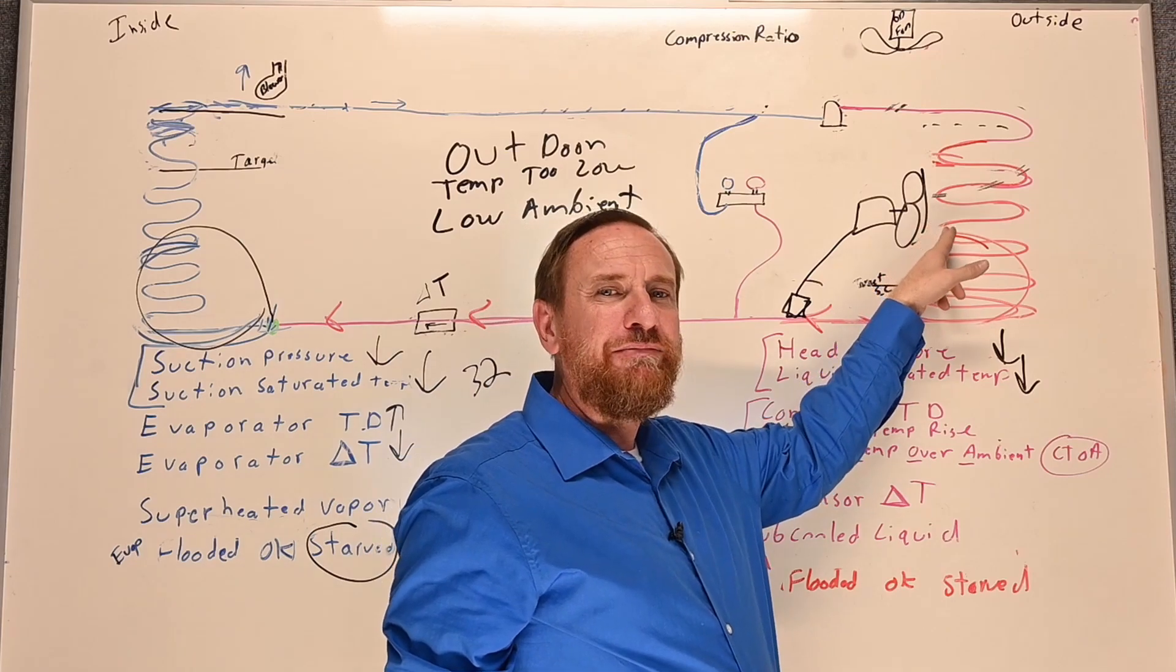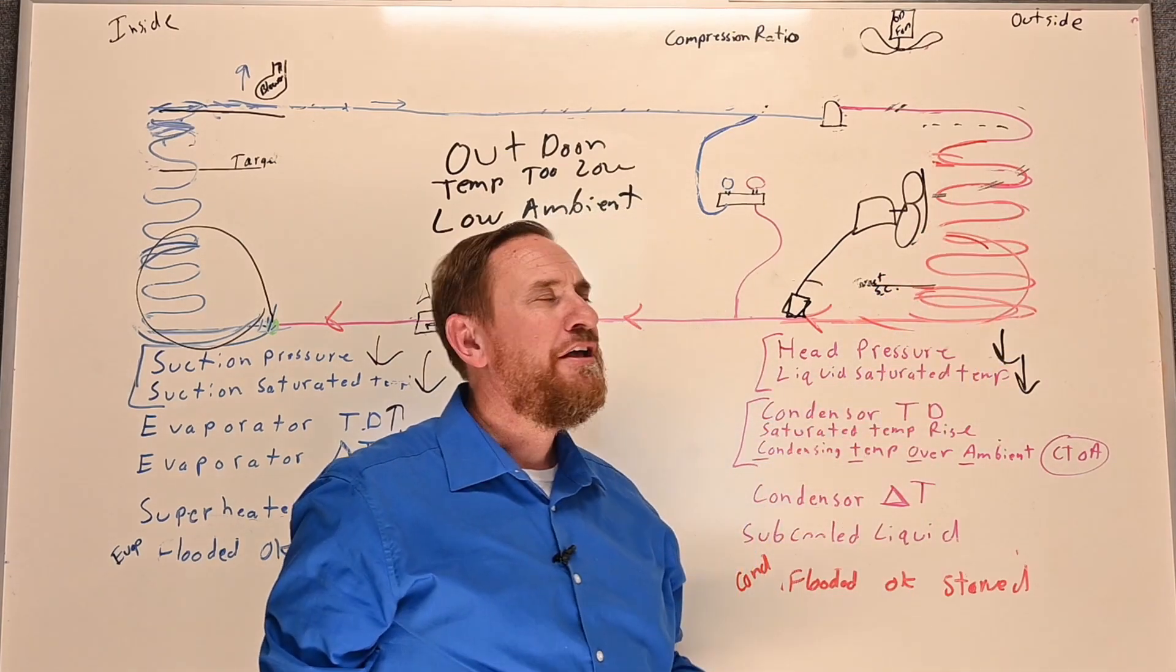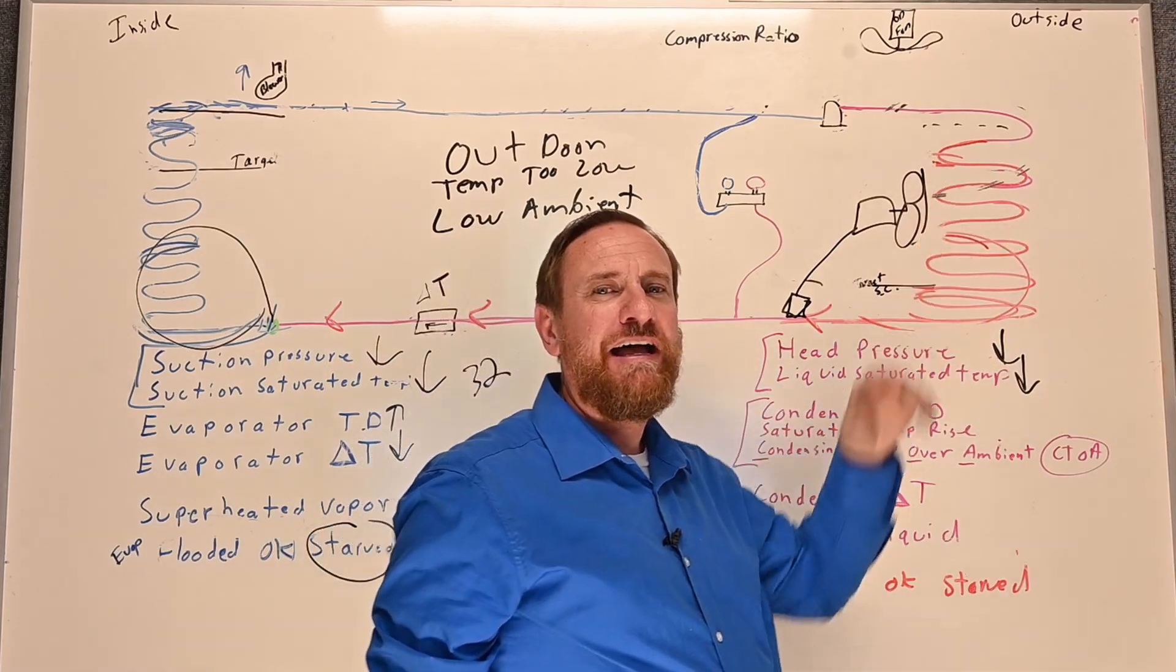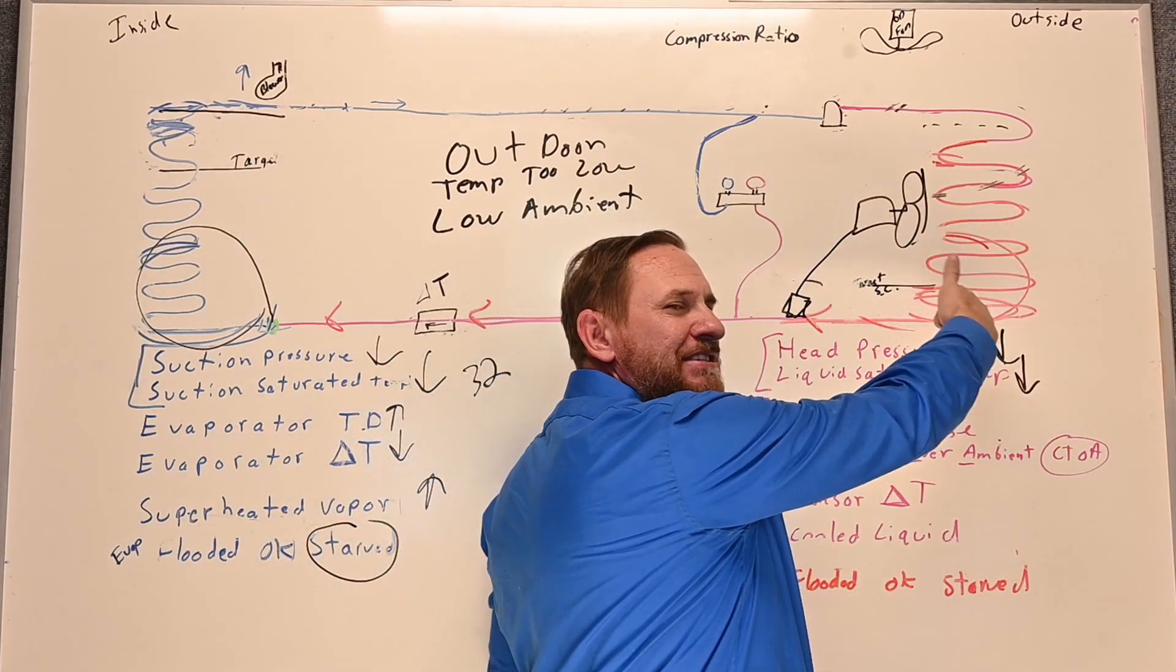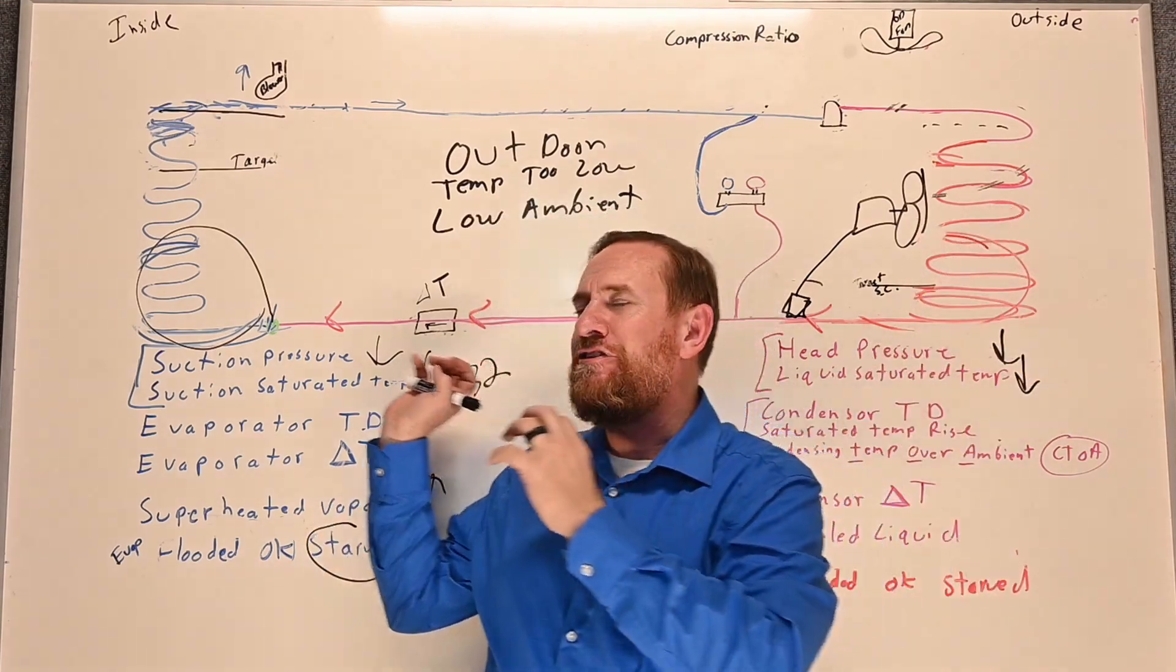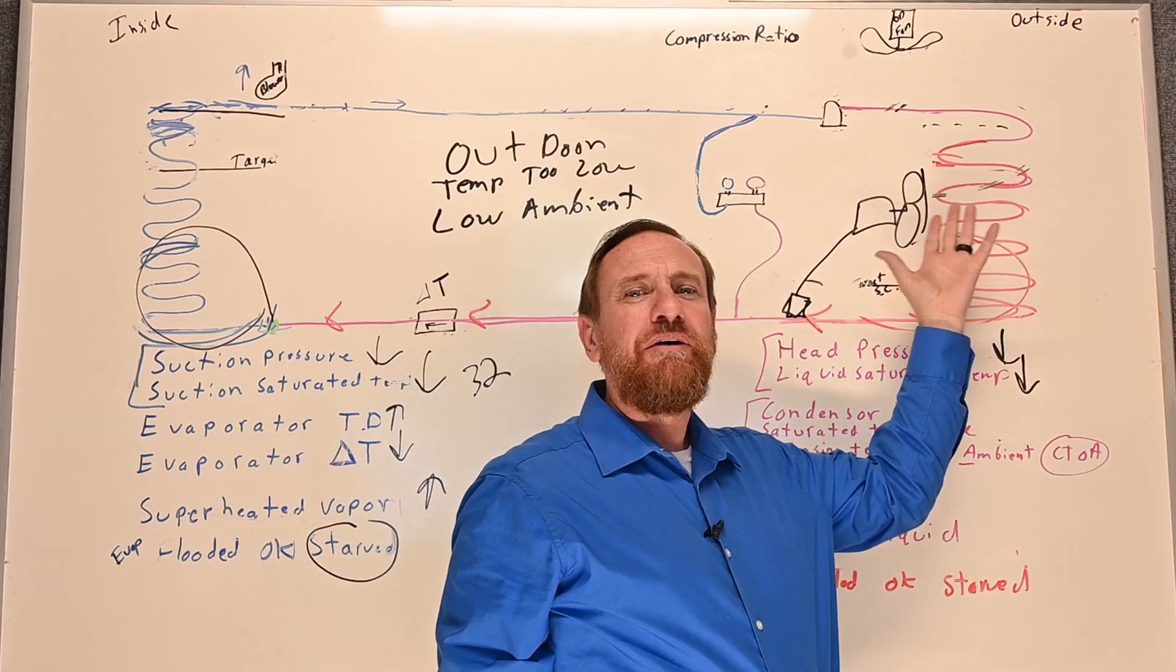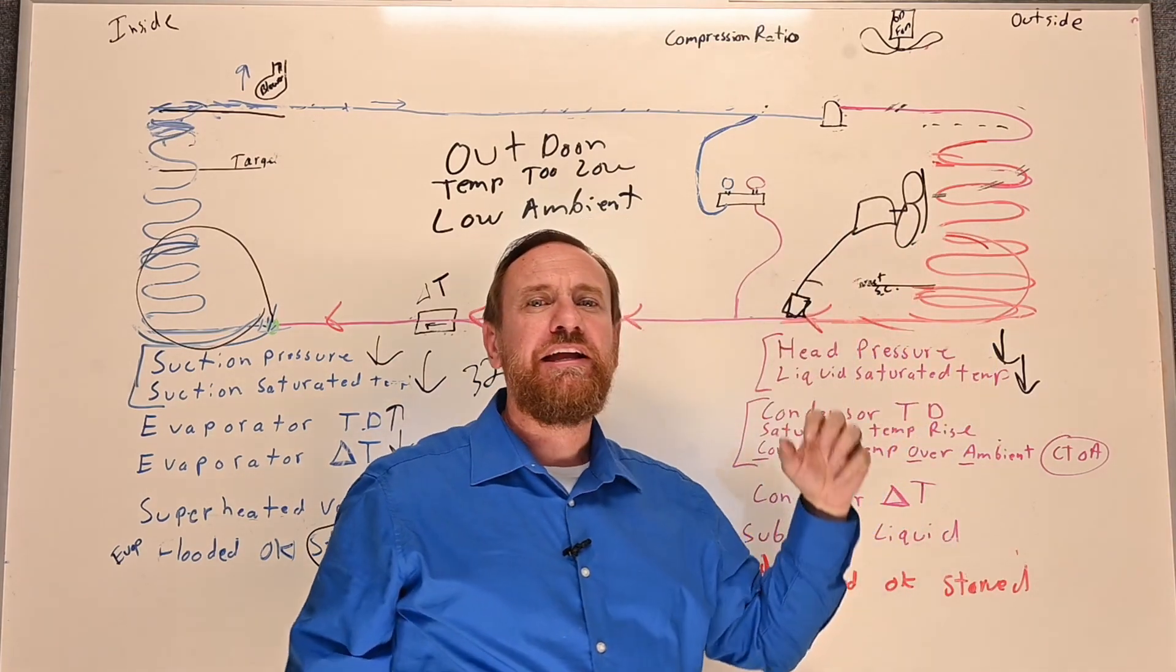But if I shut this fan motor off, I'm now moving less heat across that evaporator coil. By moving less heat across the evaporator coil, my head pressure is now starting to go up and my liquid saturated goes up. Now I'm pushing enough refrigerant in my evaporator coil that all of this starts going back in the range. But we can control our head pressure with a low ambient kit.